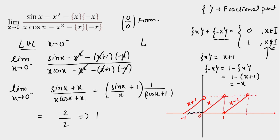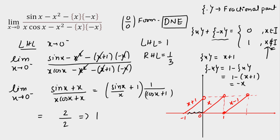So the left-hand limit LHL = 1. Since RHL = 1/3 and LHL = 1, LHL ≠ RHL. Therefore, the limit does not exist. This is our final answer.